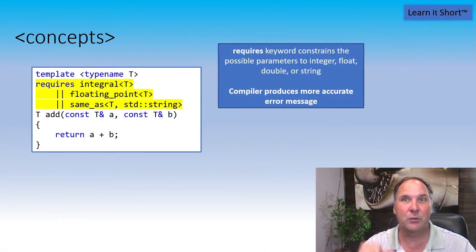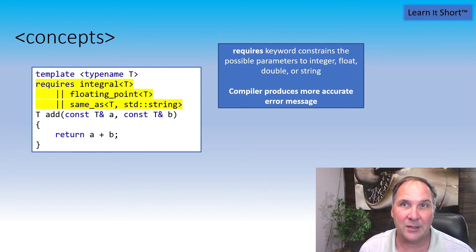First of all, you're going to want to include the concepts header file and become familiar with the concepts library. The first thing that C++ adds relating to this is a new keyword called requires. The requires keyword lets me specify what constraints are on the template parameters. In this example, I'm stating that the parameter type T has to be an integral type, which is any of the integer types.